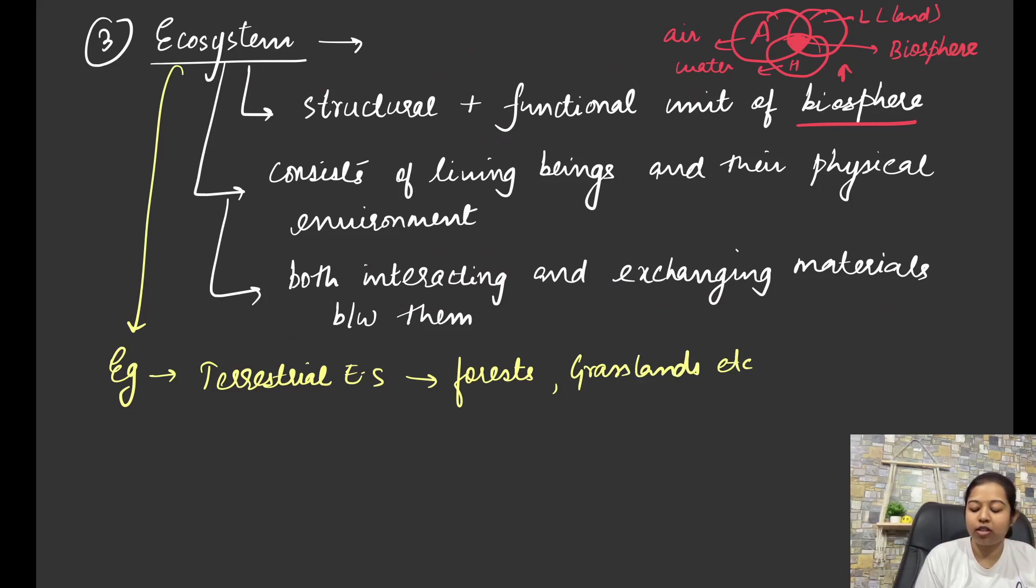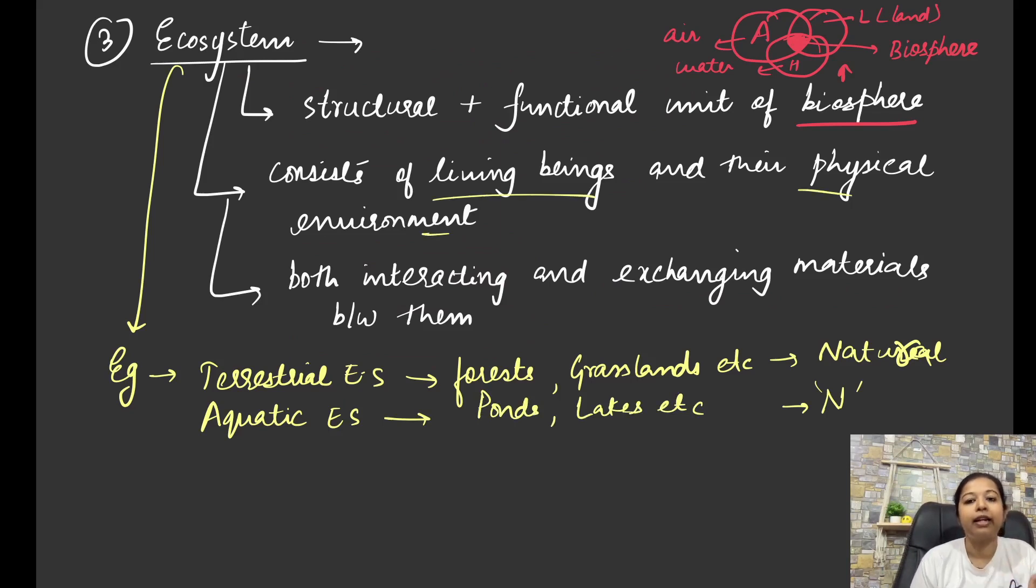Then you will have another kind of ecosystem which is aquatic. This is also natural only. Aquatic, what examples? Let's say ponds, lakes, rivers, etc. Because here living beings are there. And their environment is also there. And they are interacting and exchanging materials between them. What are the things that can be exchanged? For example, energy. That can be exchanged. So all of that we will do.